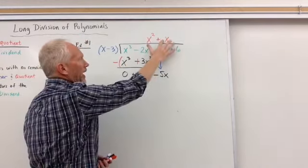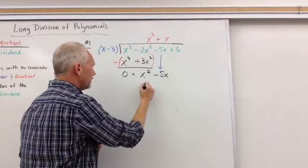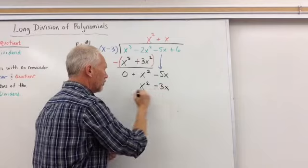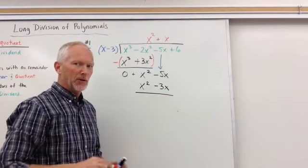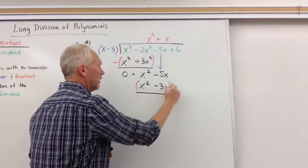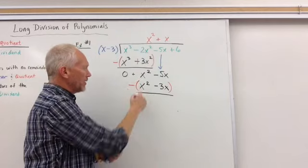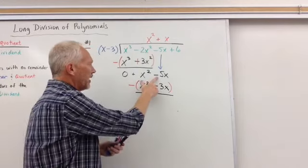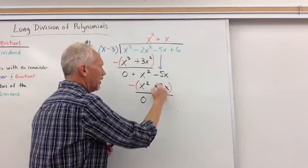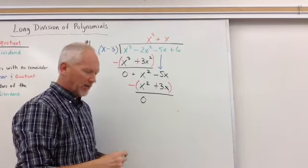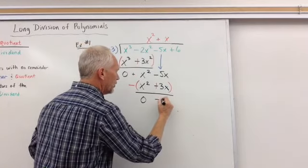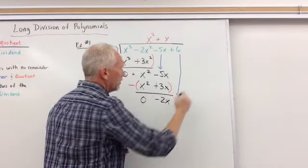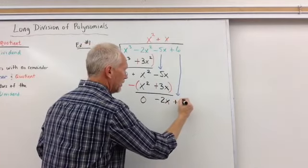So now we multiply. x times x is x squared. x times negative 3 is negative 3x. Draw my line. And what do we do next? You got it. We've got to negate. So I subtract. This will be x squared minus an x squared, which gives me a zero again, which is what I want. And then negative 5 minus a minus. Well, that's going to turn this into a plus. So negative 5x plus 3x will be negative 2x. And again, what do I do? Bring down the next number. And we get plus 6.